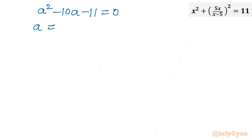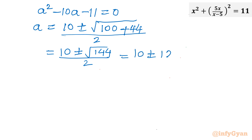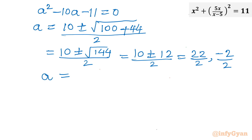Using the quadratic formula: a = (10 ± √(b² - 4ac)) / 2a = (10 ± √(100 + 44)) / 2 = (10 ± √144) / 2 = (10 ± 12) / 2. So the values of a are: with plus sign 22/2 = 11, and with minus sign -2/2 = -1.